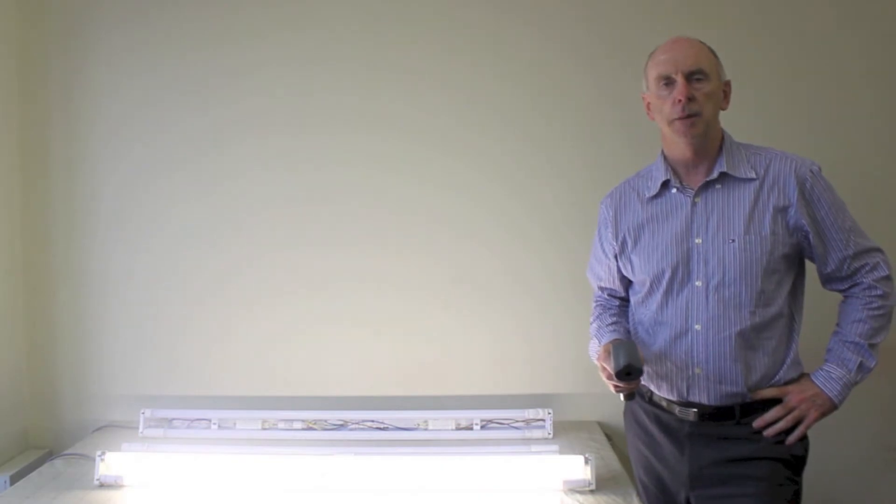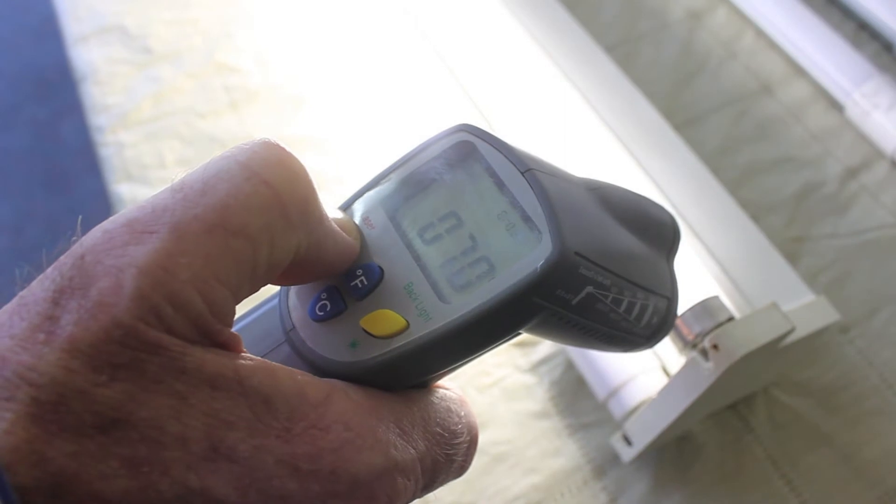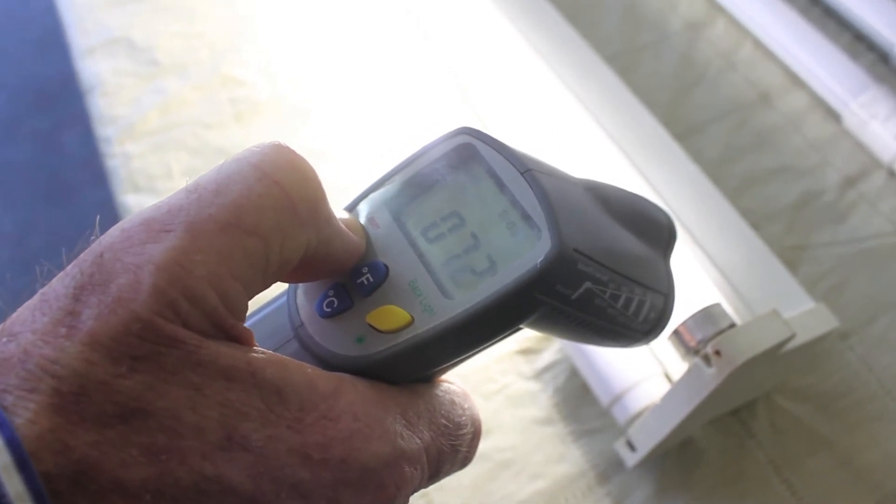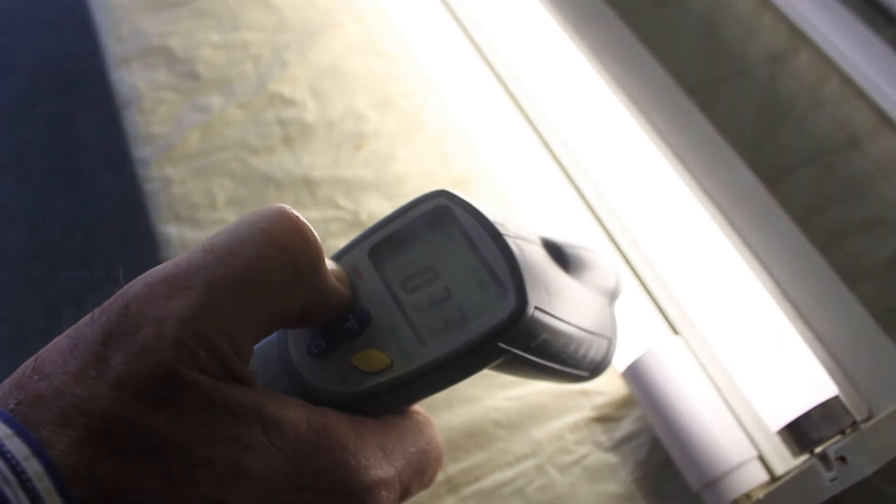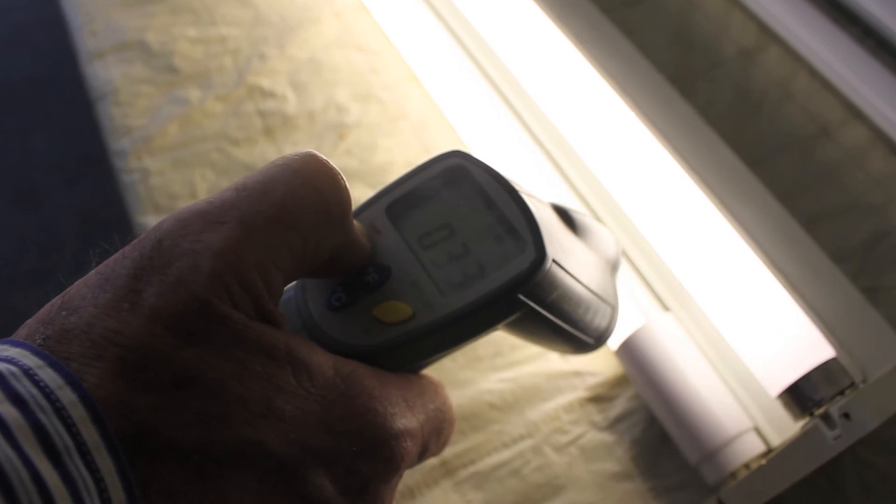Today we're just going to demonstrate the temperature difference between a normal fluorescent light and an LED tube. Temperature now is measuring somewhere between 69 and 70 degrees on the 1200 millimetre fluorescent tube. On the normal LED tube, we're measuring approximately 33 degrees, 34 degrees on the end.